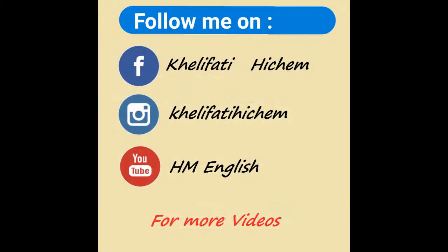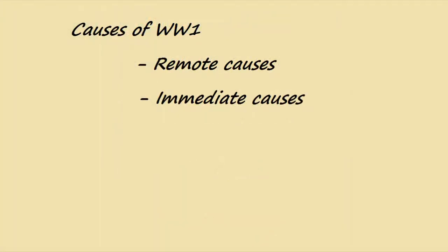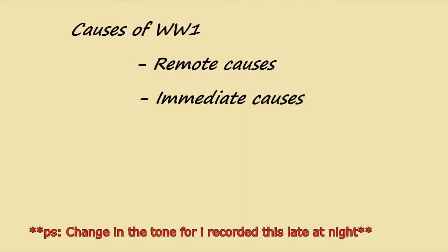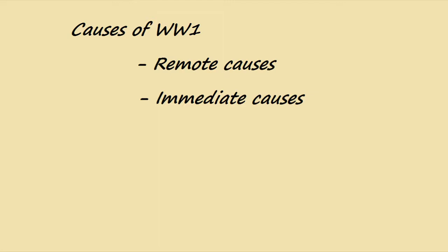Without any further ado, we shall start with the causes. In terms of causes, you need to make a clear difference between remote causes and immediate ones. Remote causes can be found under the name of long-term causes, and immediate ones can also be found under the name of direct causes or short-term causes. Long-term causes existed long before the beginning of the war in 1914, and they kept existing over time until the beginning of the war — they were considered major problems that led to the war.